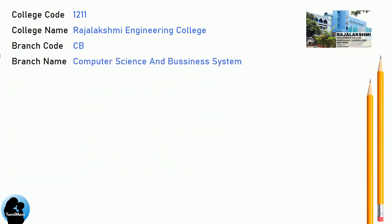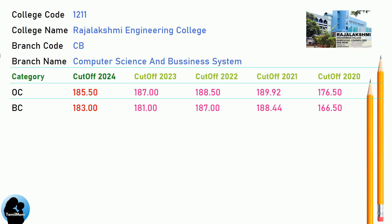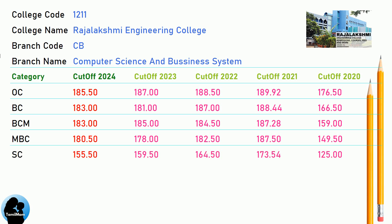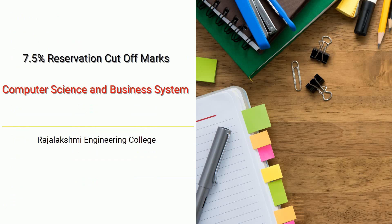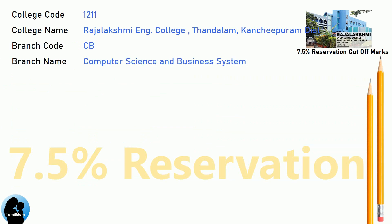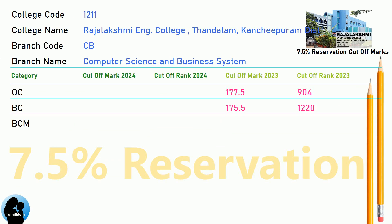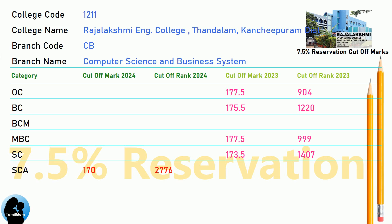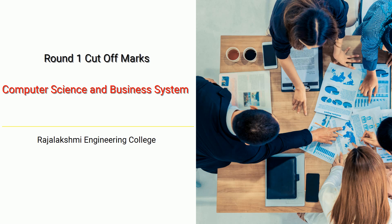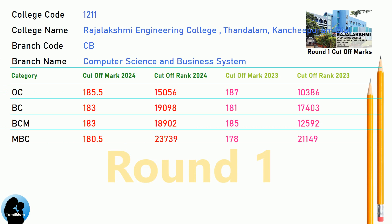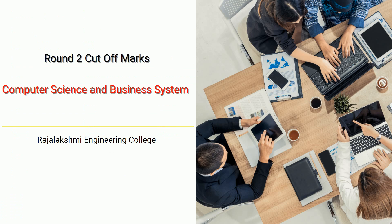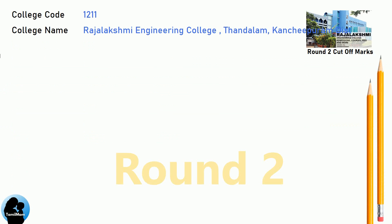BNEA 8.5 Reservation Cut-Off for Raj Lakshmi Engineering College in Computer Science and Business System. DNA 7.5 Reservation Cut-Off for Rajrakshmi Engineering College in Computer Science and Business System. DNA Round 1 Cut-Off for Rajrakshmi Engineering College in Computer Science and Business System. DNA Round 2 Cut-Off for Rajrakshmi Engineering College in Computer Science and Business System.